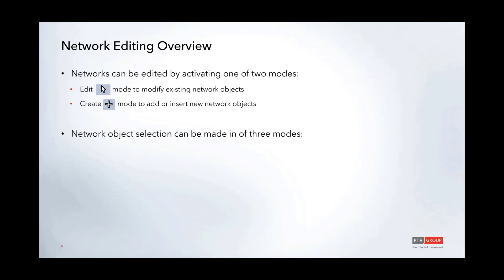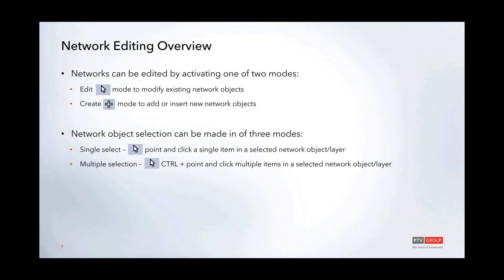Network object selection in vZoom works in three ways. First is single select — in edit mode, point and click a single item such as a link, node, or stop point. Second is multiple selection, where you hold the Control key and click multiple objects across the network. Third is special selection — a freehand polygon or territory selection where you draw a polygon interactively and select all objects within it.